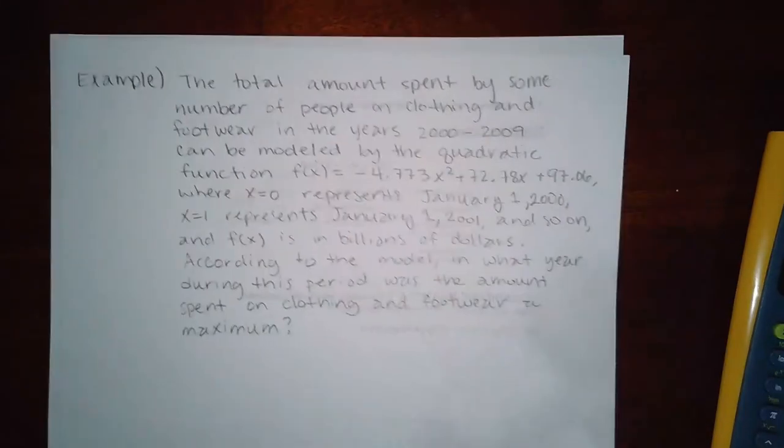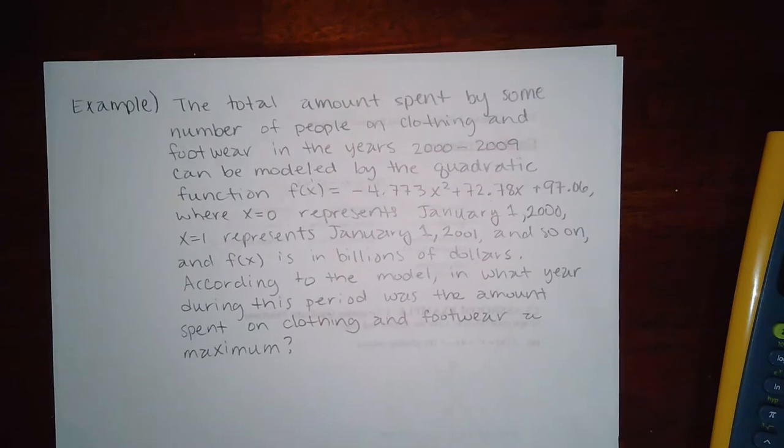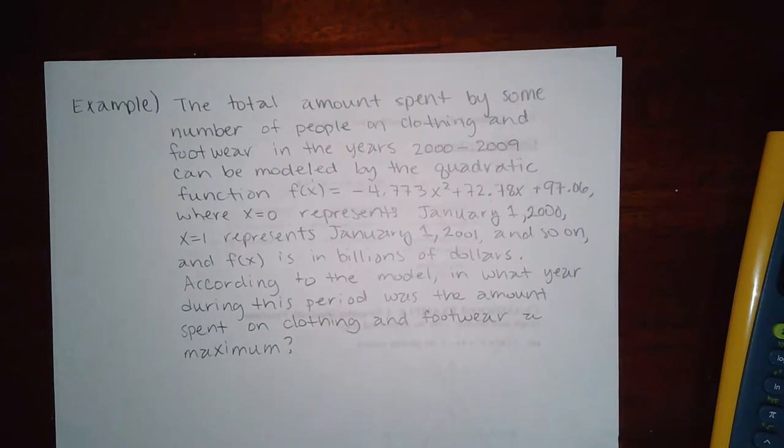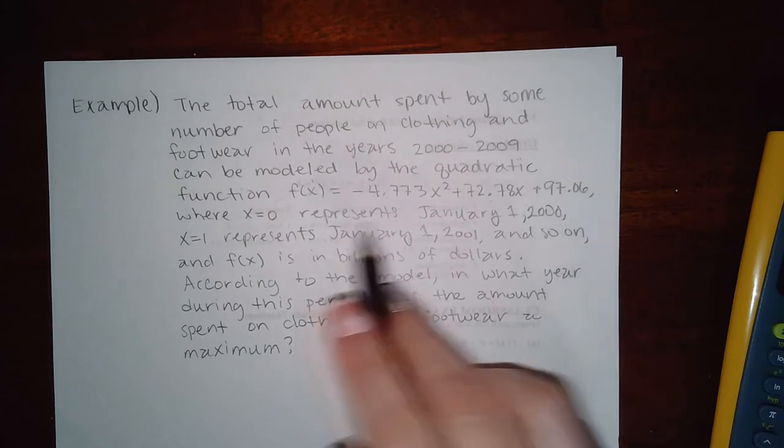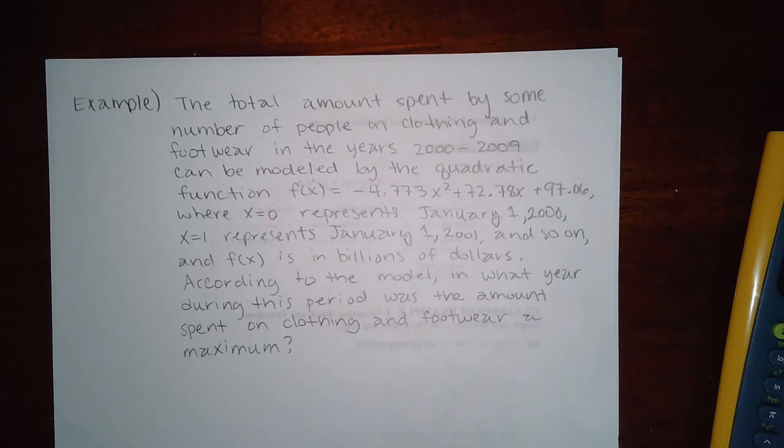This one says the total amount spent by some number of people on clothing and footwear in years 2000 to 2009 can be modeled by the quadratic function f(x) equals all of this, where x represents January 1, 2001 represents January 1 of 2001, and so on. f(x) is in billions of dollars. According to the model, in what year during this period was the amount spent on clothing and footwear at a maximum?